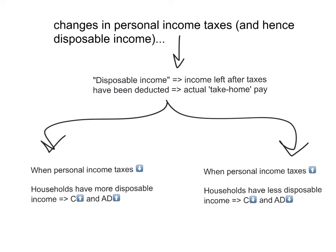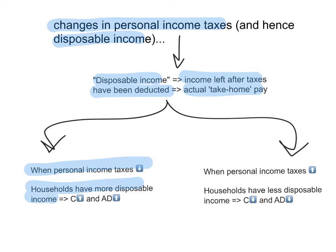Another factor that causes changes in consumption spending and therefore changes in aggregate demand is changes in personal income taxes, because when personal income taxes change, people's disposable income changes as well. Disposable income is the income left after taxes have been deducted — essentially your actual take-home pay. When personal income taxes fall, households have more disposable income and consumption spending increases, so aggregate demand increases and the curve shifts to the right. When personal income taxes increase, households have less disposable income, less money to spend, so consumption spending falls and aggregate demand decreases, shifting the curve to the left.